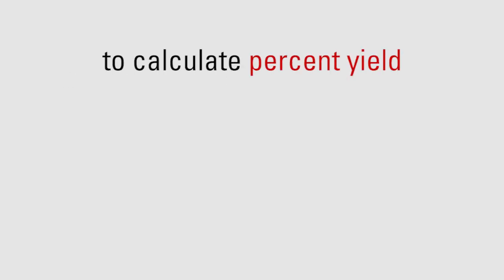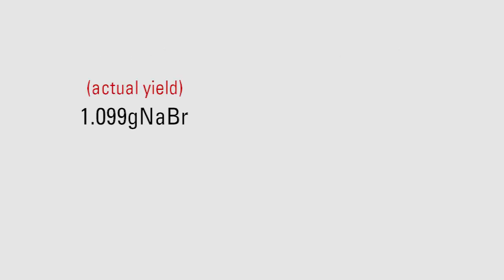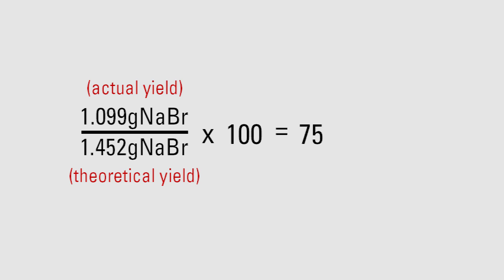To calculate percent yield, you simply take actual yield, 1.099 grams of sodium bromide, divided by the theoretical yield, 1.452 grams of sodium bromide. Lastly, multiply by 100 for a percent value.